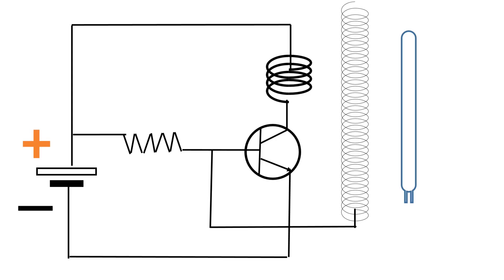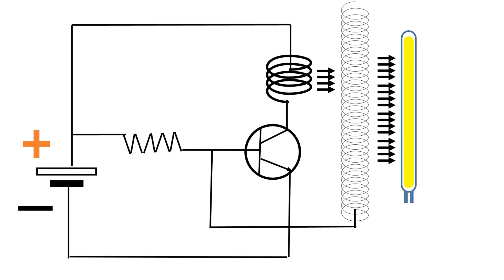No negative current is flowing from the secondary coil to the base. Once again, emitter current flows through the transistor. It enables the current to flow through the primary coil and the transistor. The sudden flow of current induces electrical energy in the secondary coil. The mini tube light glows.